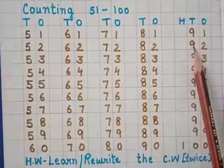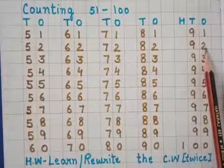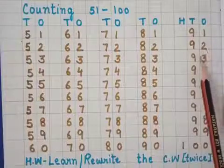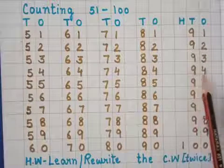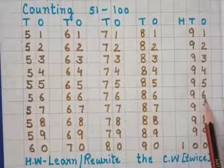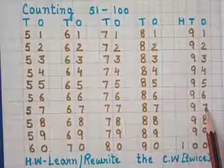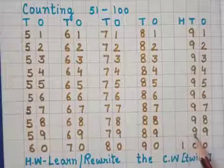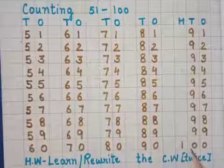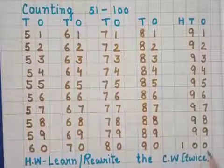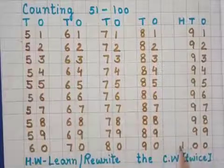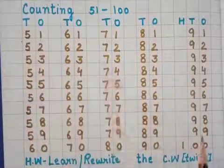91, 92. What comes here? What have you written here after 92? 93. Yes — 94, 95, 96, 97, 98, 99, and here you have to write 100. So it's your counting 51 to 100 — ye aapke counting hai, 51 se 100 tak.